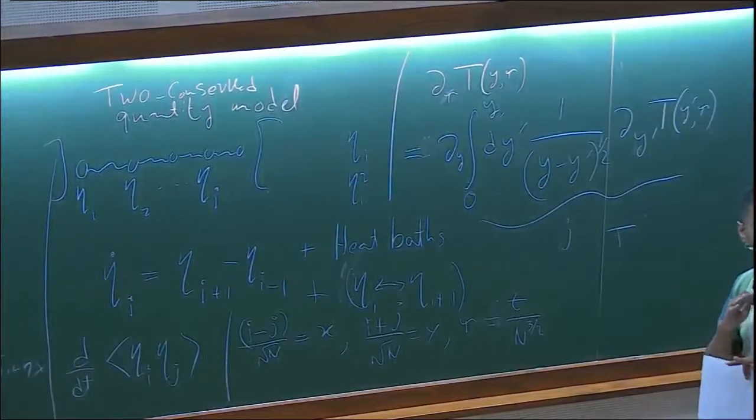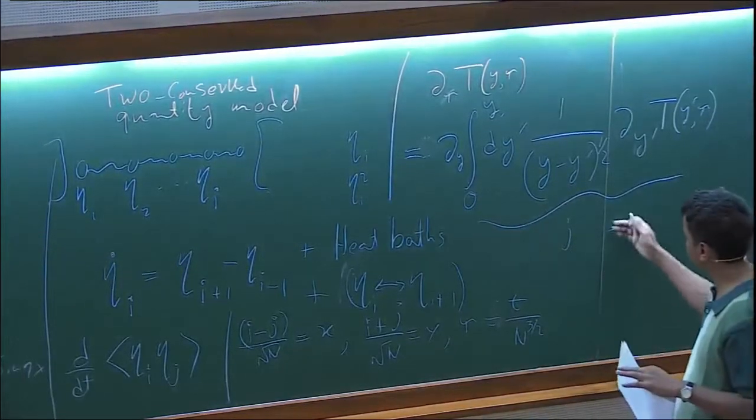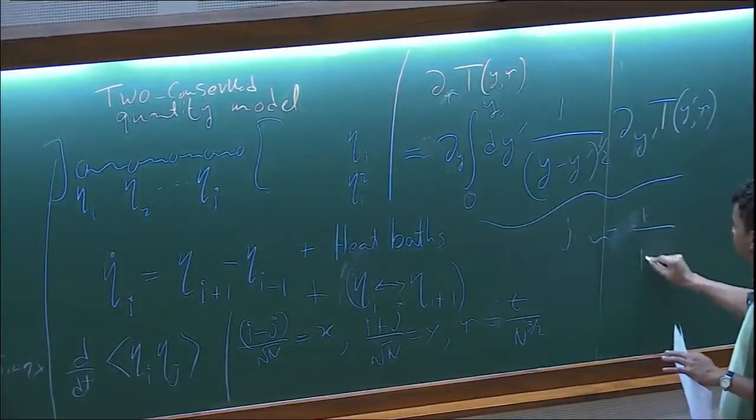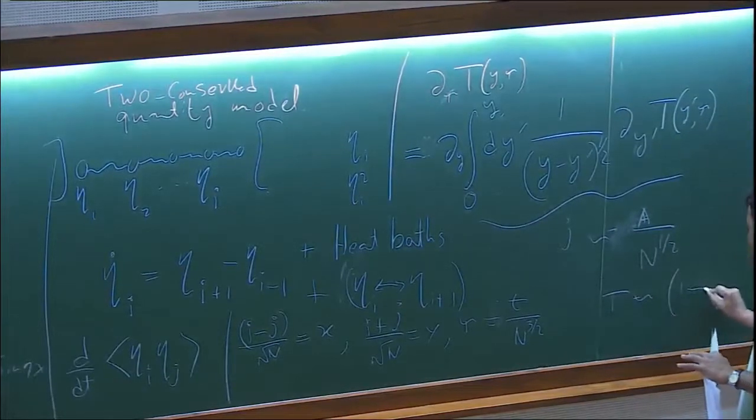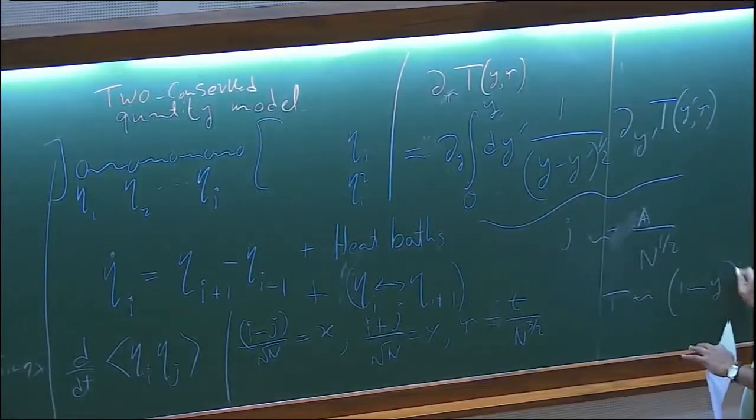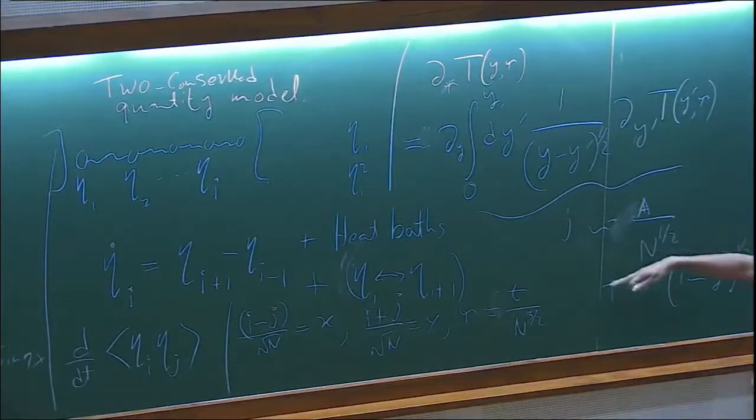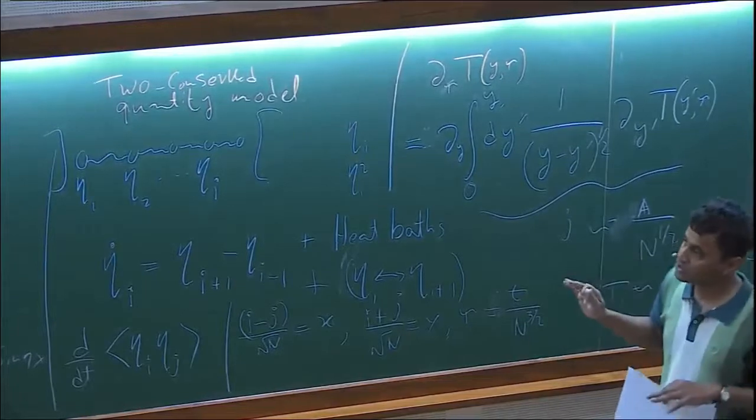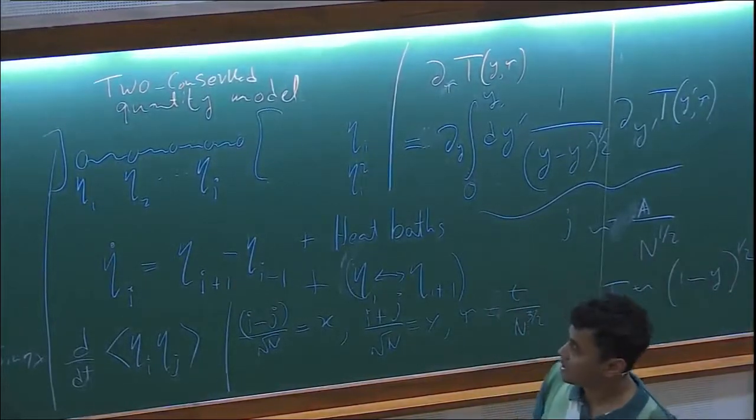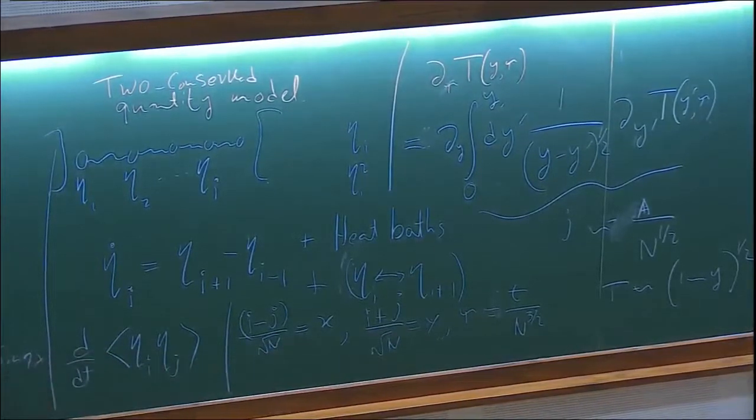Actually we can solve this equation completely in the finite domain and we are able to find the temperature profile exactly which is nonlinear, some nonlinear function. We can find the current as a function of size exactly. The current goes as one by n to the power half and we can even find this pre-factor. The temperature goes as one minus y to the power half. We can also find not only the steady state properties but also the approach to the steady state time dependent properties completely. So basically the main message is for a system with anomalous transport we have a complete description of what the diffusion equation does for systems with normal transport.